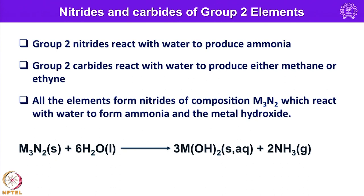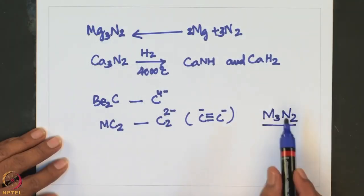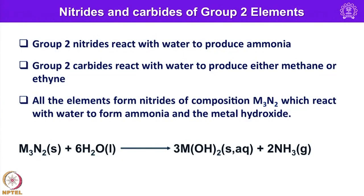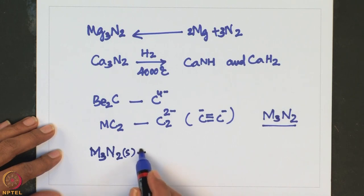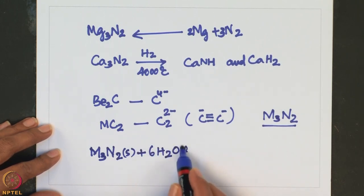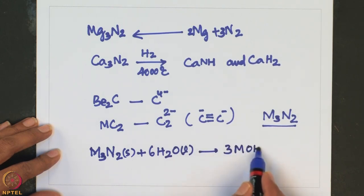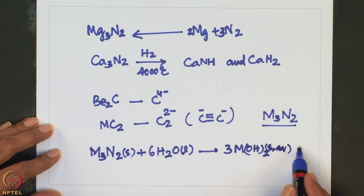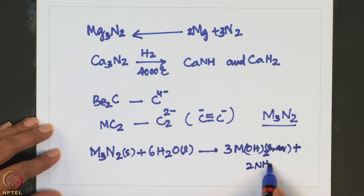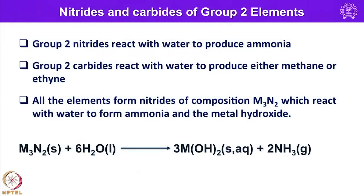All elements of group 2 form nitrides with the composition M3N2, which readily react with water to form ammonia and the corresponding metal hydroxide. One can write a general equation: M3N2 plus water (aqueous medium) gives the metal hydroxide plus 2NH3. So all metal nitrides of group 2 elements react with water to form the corresponding metal hydroxide with liberation of ammonia.